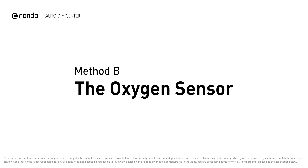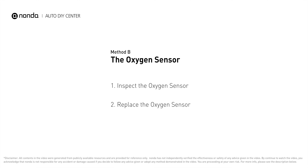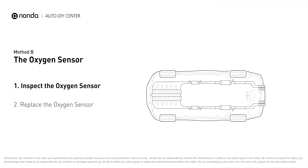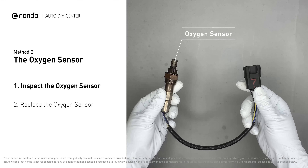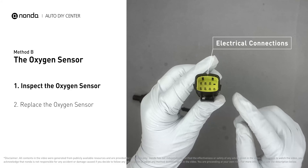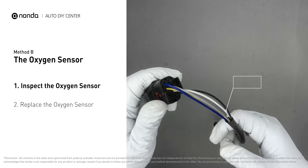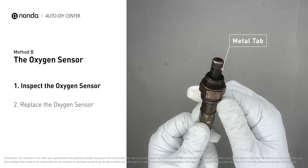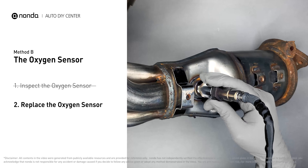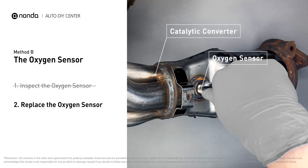Method B: The Oxygen Sensor. This oxygen sensor is located right after the catalytic converter. Bank 2 is on the side with cylinder number 2. Sensor number 1 is usually the downstream oxygen sensor behind the converter. Visually check the oxygen sensor's electrical connections, wire harness, and metal tabs for any damages. If damages are found, replace the oxygen sensor.